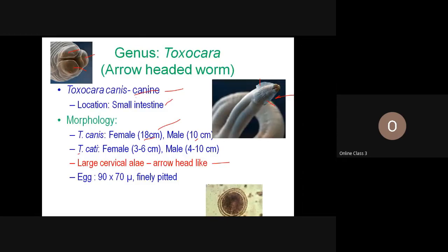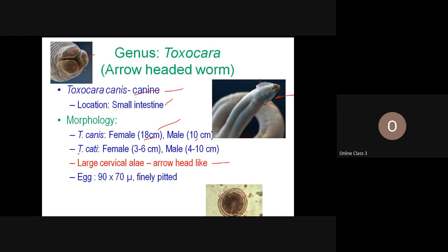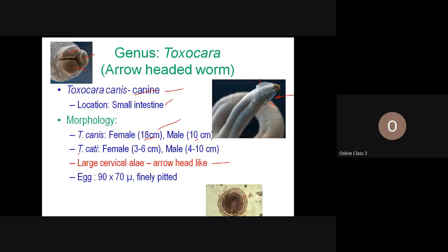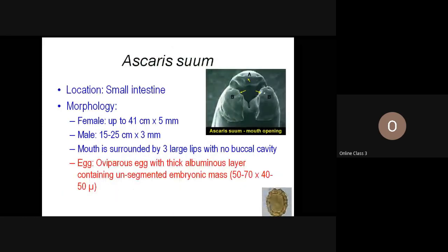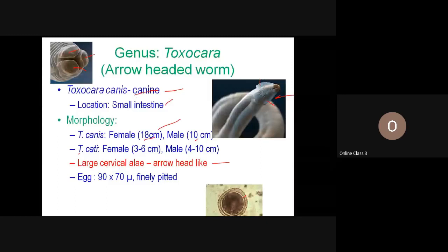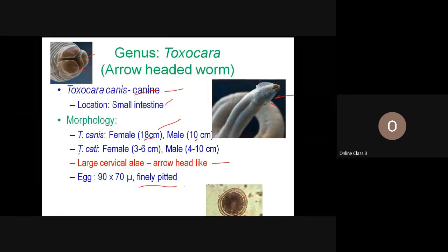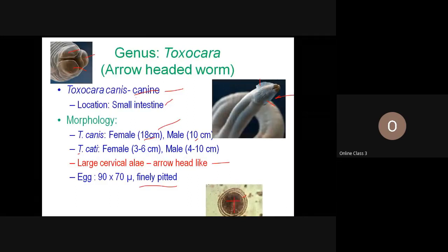The egg is covered with a thick albuminous layer. In Ascaris, the parasite also has a thick serrated albuminous layer — but in the case of Toxocara, the eggshell is a bit smoother and finely pitted. The identification is based on the host and on whether there is an embryonic mass. Here there is an unsegmented embryonic mass.